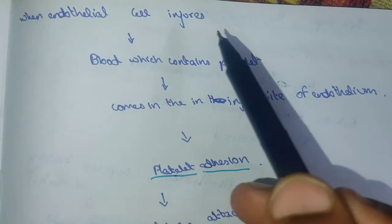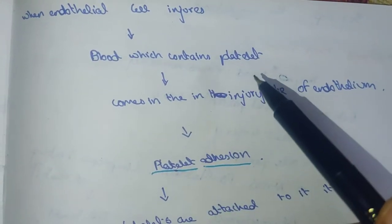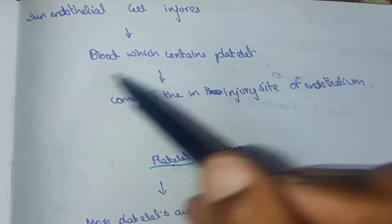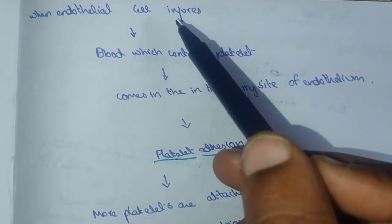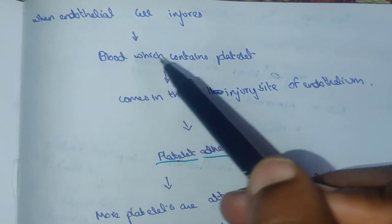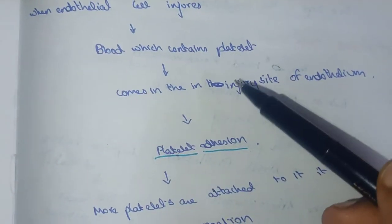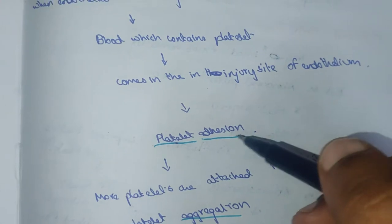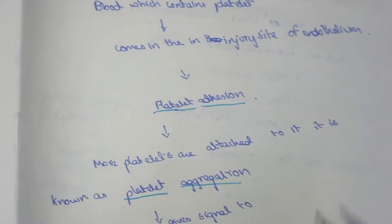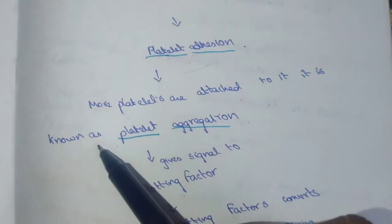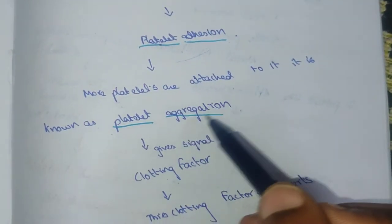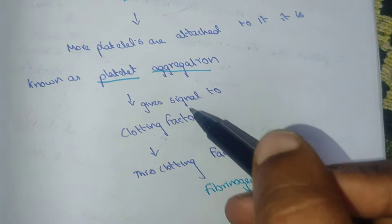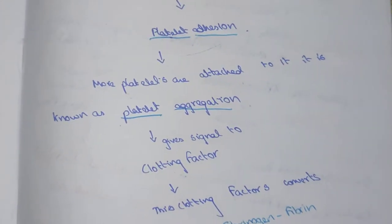When the endothelial cell is injured, the blood which contains platelets comes in contact with the injury site of the endothelium. More and more platelets attach, which leads to platelet adhesion. Further accumulation is known as platelet aggregation, and this gives a signal to clotting factors.